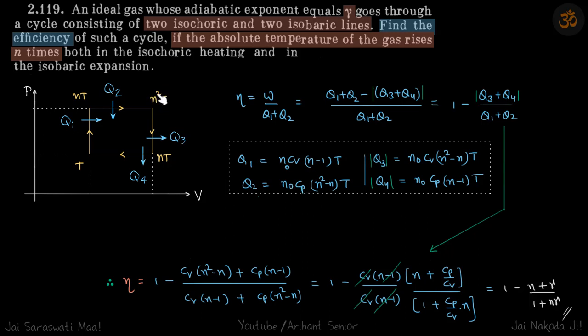Similarly, q3 equals n₀cv(n²t - nt), and q4 equals n₀cp(nt - t).